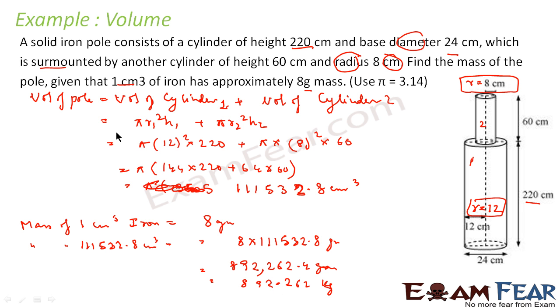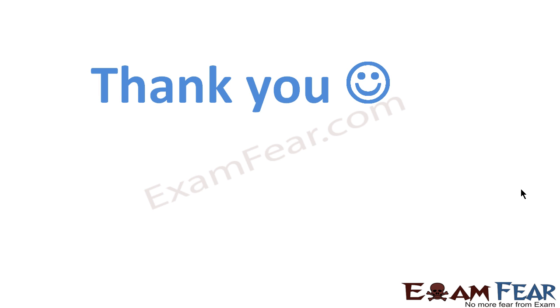Very simple. The key step is to find the volume first, because 1 cm³ equals 8 grams. Once you know the volume, you can find the mass directly.